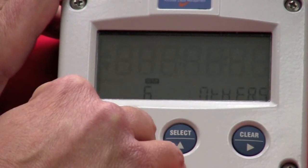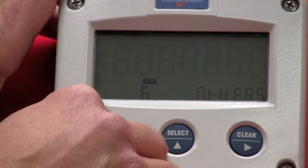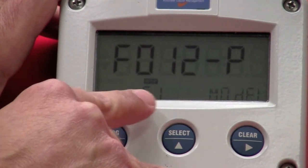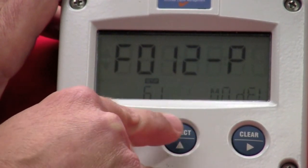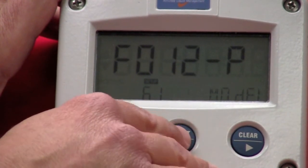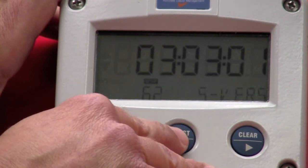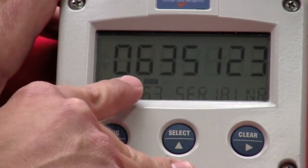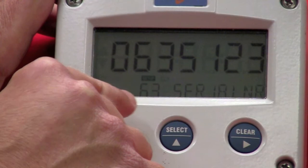Let's hit one more. This is the other menu. To get into there, we're just going to hit select. This is the model. Our particular demo is an F012P for pulse. This takes a pulse input. We arrow up again. You'll see the software version. You'll also see the serial number.